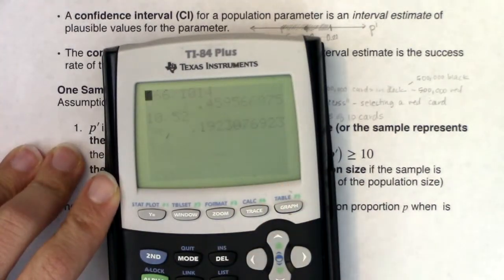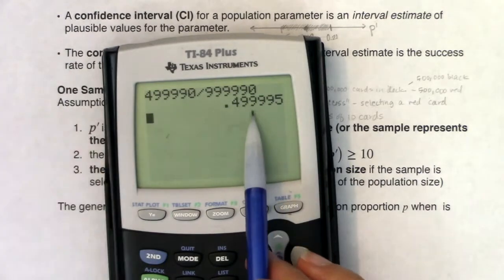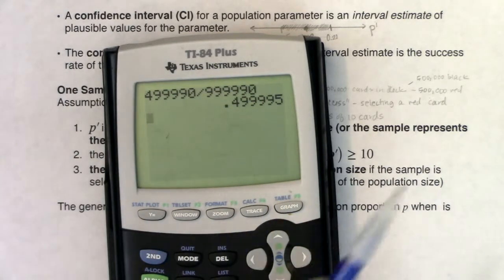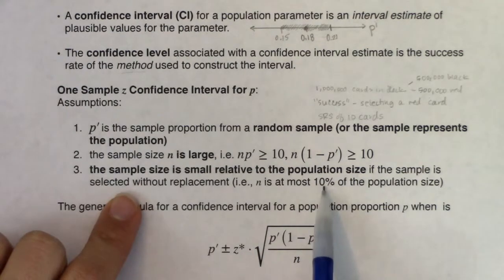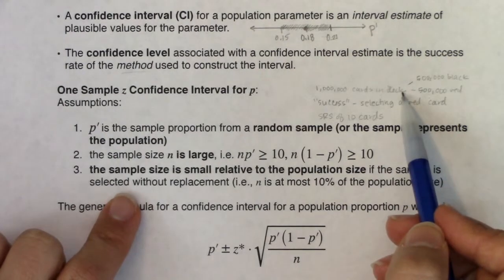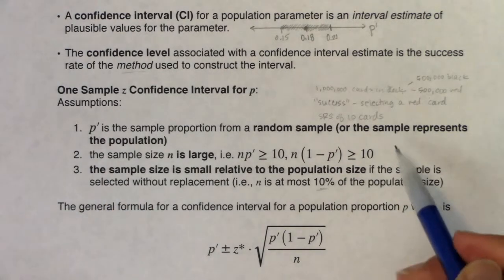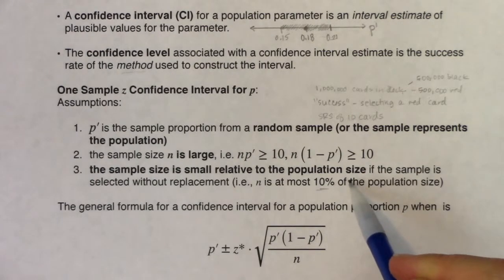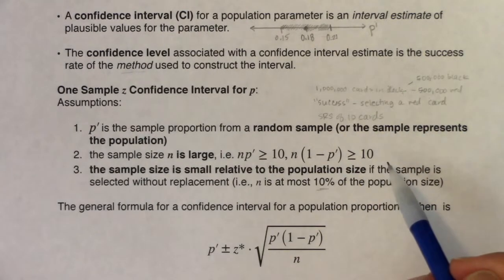Even if all 10 selected cards were black, you'd still have roughly a 50/50 split in the remaining population. So if your sample size is less than 10% of the population, selecting without replacement is essentially the same as selecting with replacement. That's the 10% rule we use in statistics.